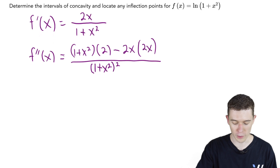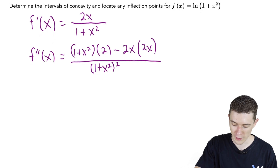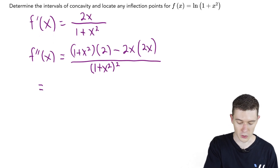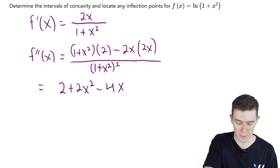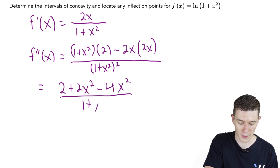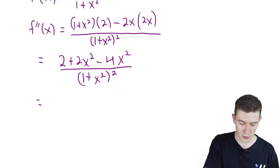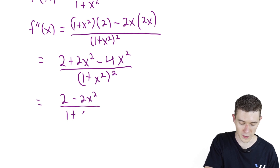It will be very helpful if we simplify this. Let's distribute: 2 times 1 is 2, plus 2x squared, minus 2 times 2 is 4, and x times x is x squared, over 1 plus x squared all squared. Finally, combine like terms: 2x squared minus 4x squared is minus 2x squared, over 1 plus x squared all squared.